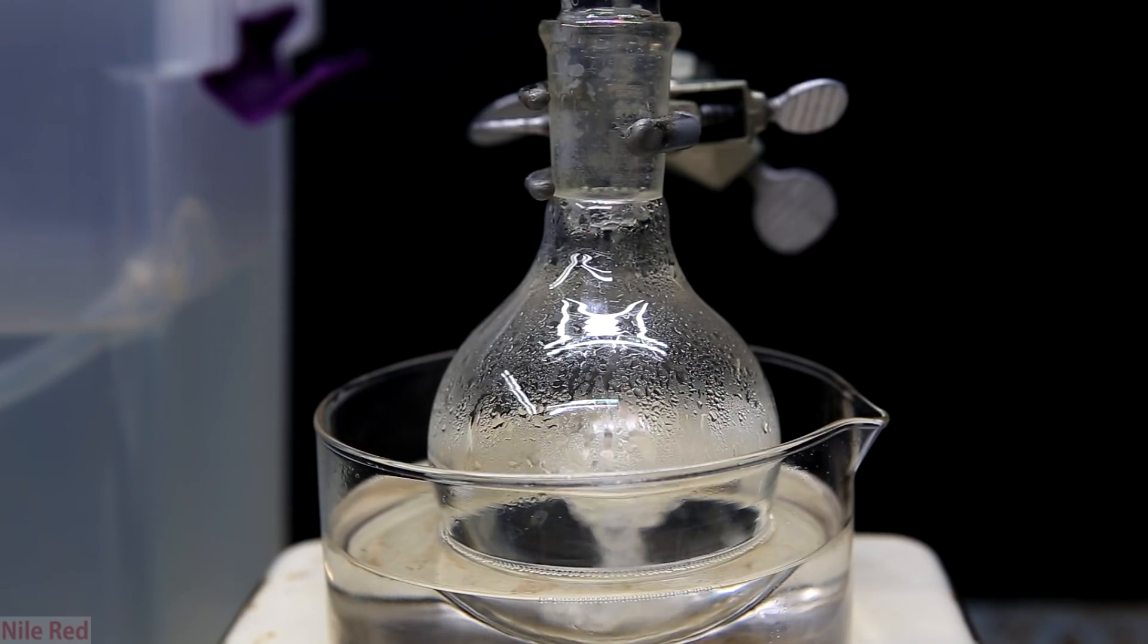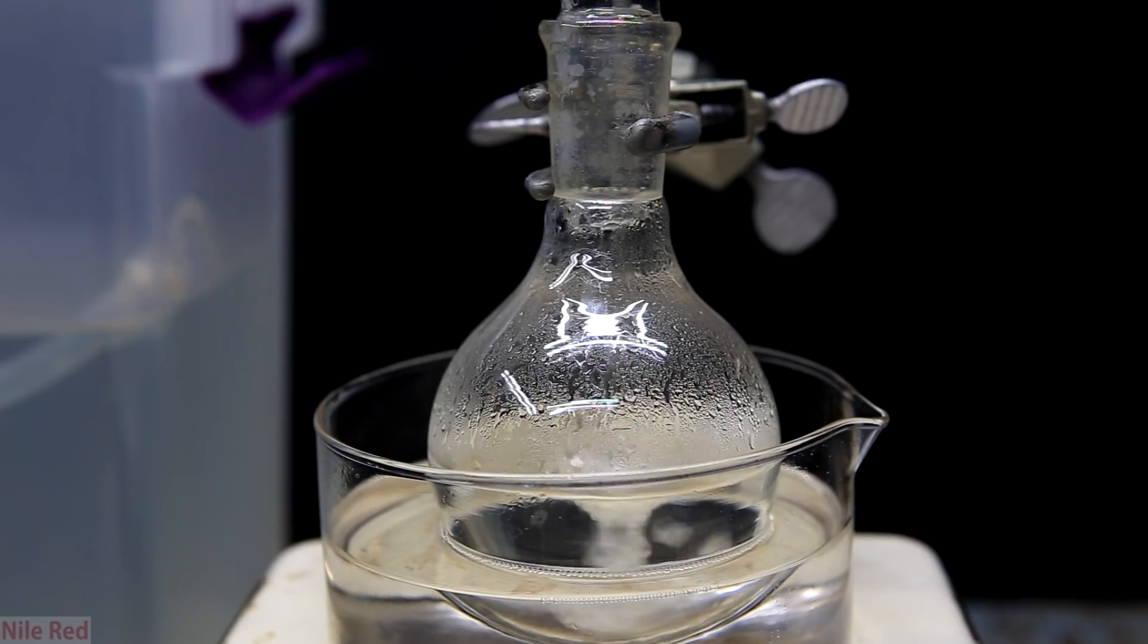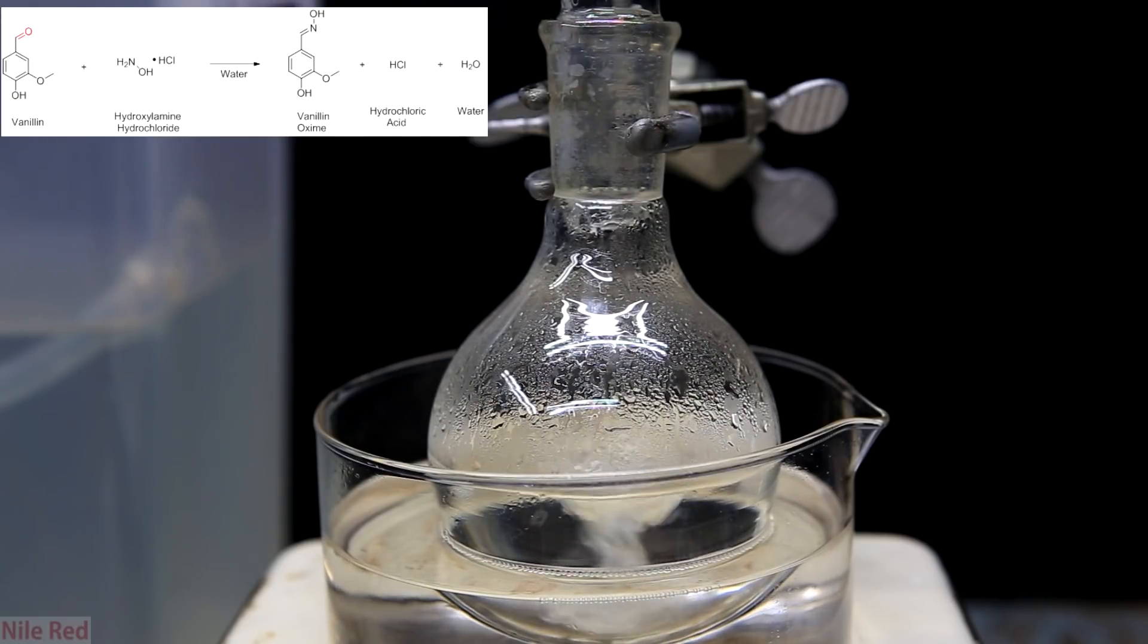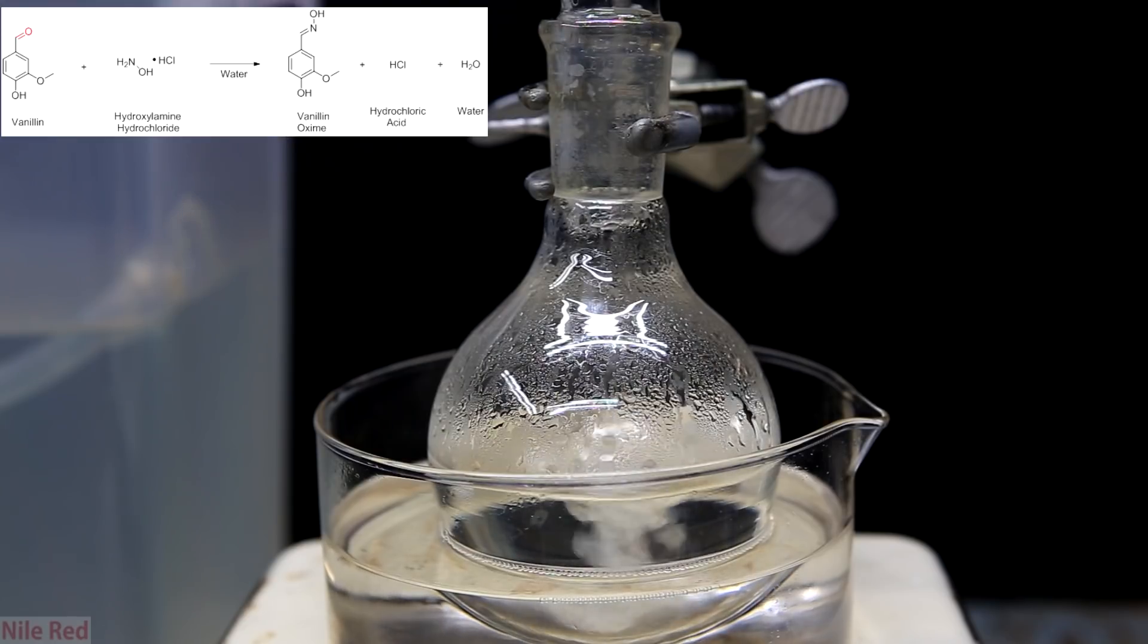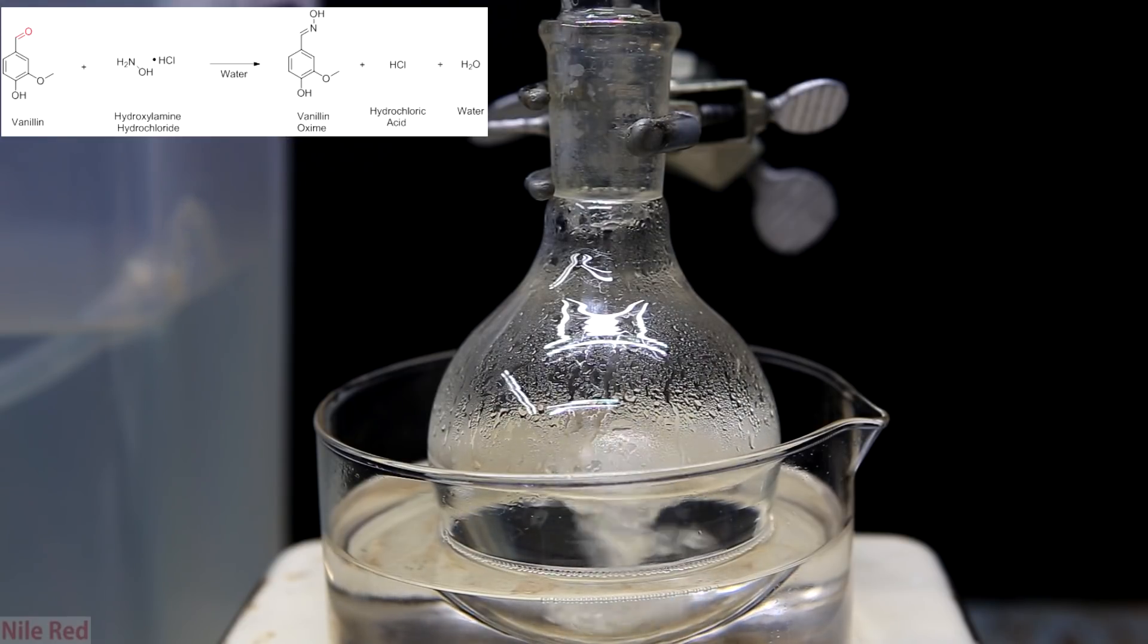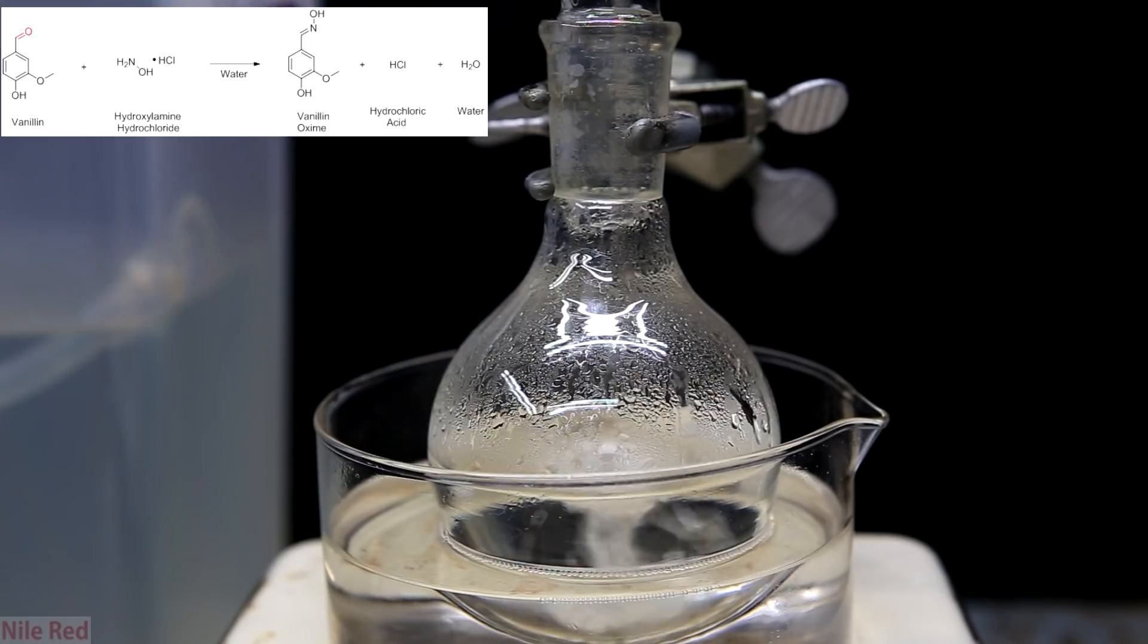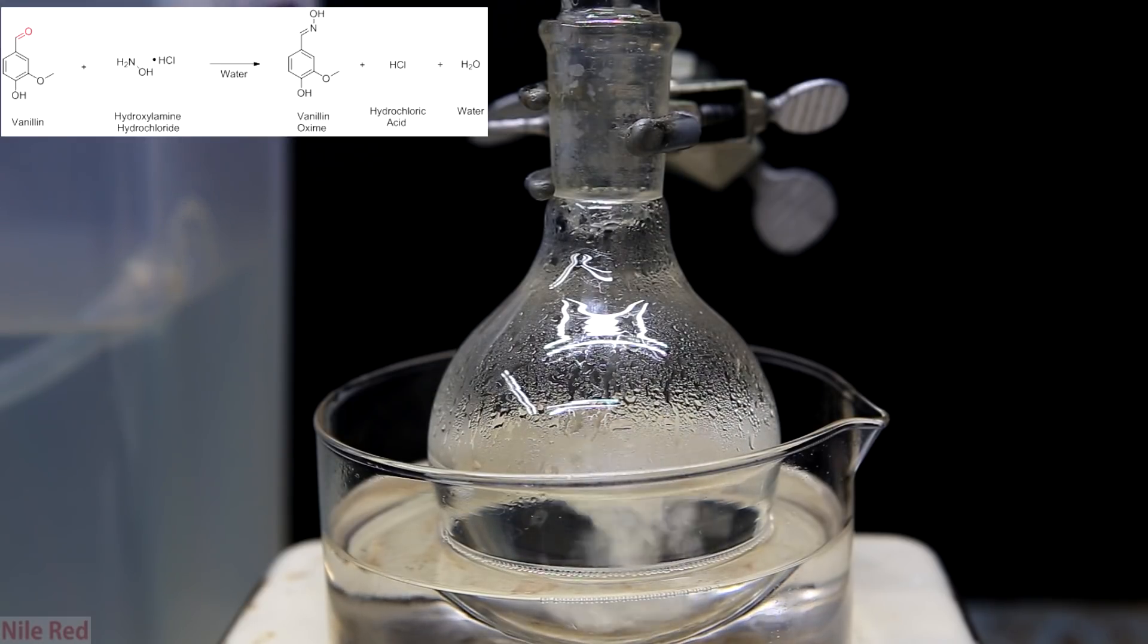Anyway now we'll address what's actually going on in the reaction. The vanillin reacts with hydroxylamine hydrochloride to form vanillin oxime, hydrochloric acid and water. One thing to note is that the HCl isn't really produced and it's kind of just released by the hydroxylamine hydrochloride. I purposely didn't include the sodium acetate in the reaction so I can make things more clear as to exactly what it's doing.